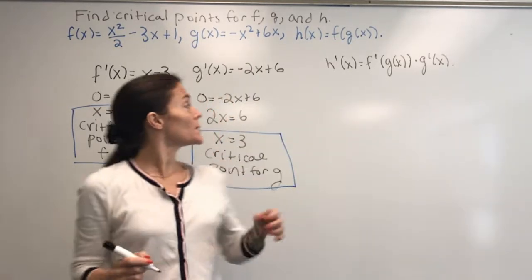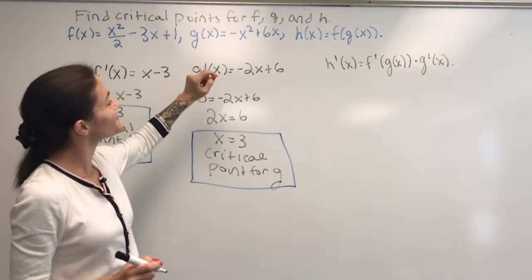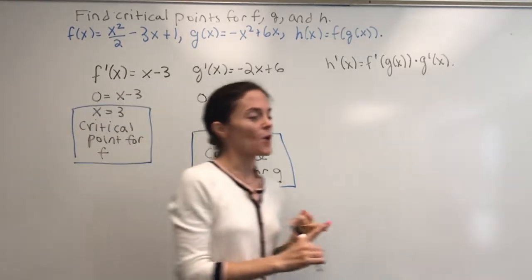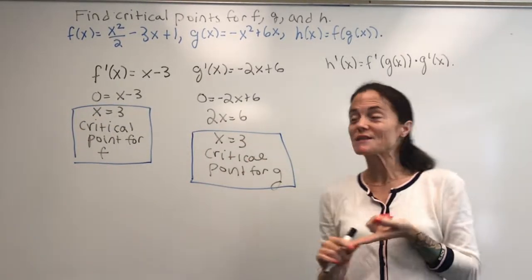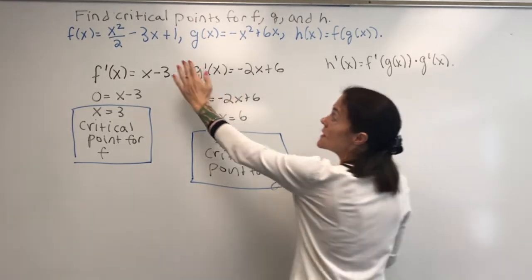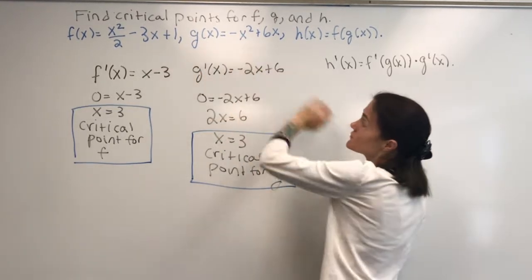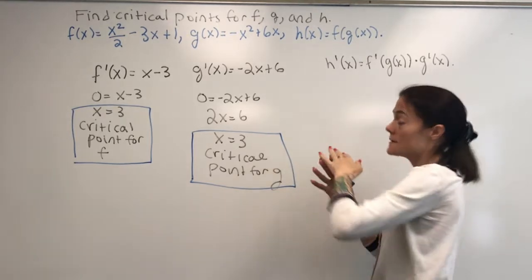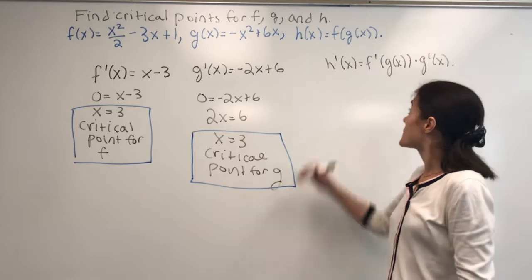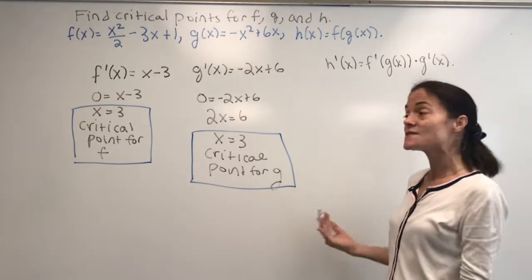It's the derivative of the outside evaluated at the inside times derivative of the inside function. So when we're looking here, we have everything. So one way to go about this, if I hadn't already done the work to compute f prime and g prime, is you can just compose these two functions, f compose g. Then you would have a function of x, and you could take the derivative using this chain rule. That's fine,